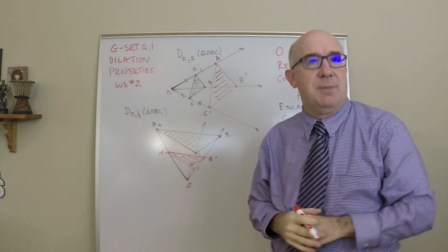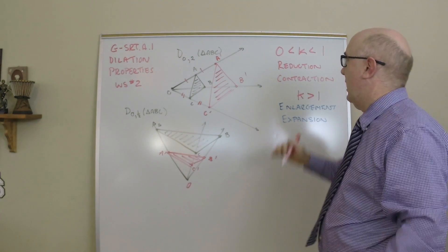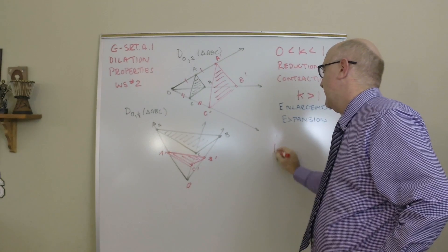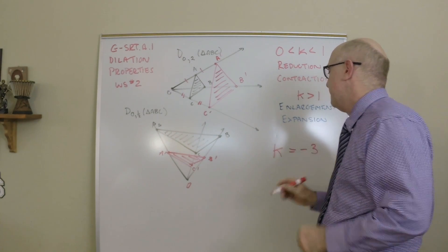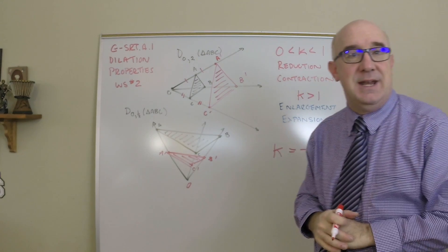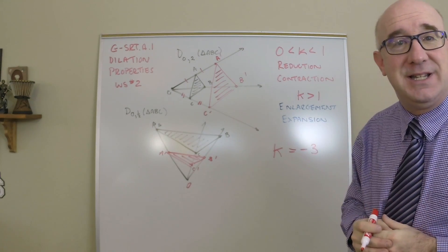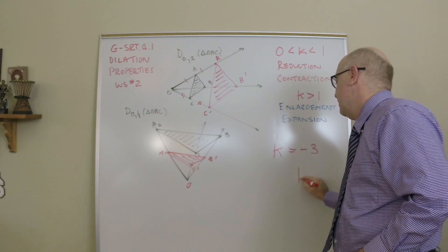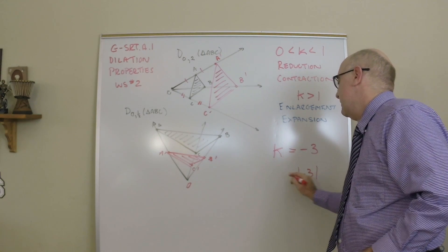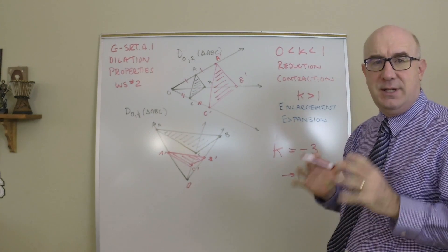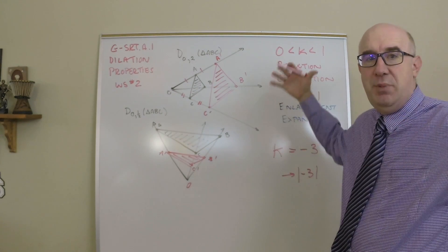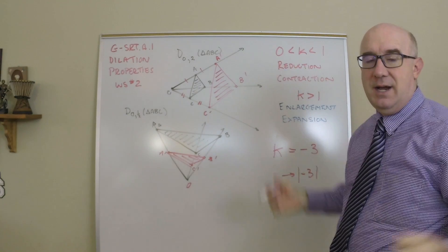Now, just quickly, let me talk about negative for a minute. The negative value, let's say k is equal to negative 3. This would mean, actually, that it's an enlargement. It gets 3 times bigger. So you can think of it as the value, the absolute value of that would still be 3. So it's still a magnifier. It's getting bigger in size by 3.